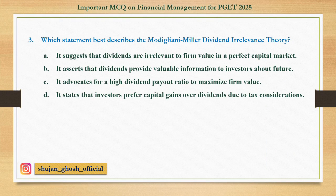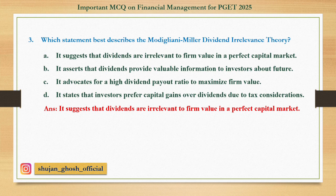Question number three: Which statement best describes the Modigliani-Miller dividend irrelevance theory? Option A: it suggests that dividends are irrelevant to firm value in a perfect capital market. B: it asserts that dividends provide valuable information to investors about the future. C: it advocates for a higher dividend payout ratio to maximize firm value. D: it states that investors prefer capital gains over dividends due to tax considerations. Answer: it suggests that dividends are irrelevant to firm value in a perfect capital market. The theory states that distributing part of profit as dividends is irrelevant to increasing the value of the firm in a perfect capital market.